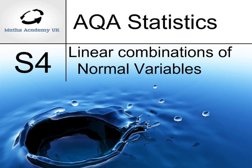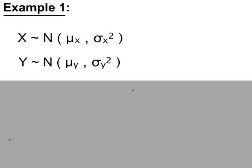Linear combinations of normal variables. Example 1. We have two normal variables, x and y. These are independent of each other. Each one has a mean and a variance.